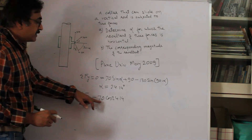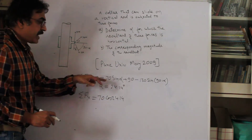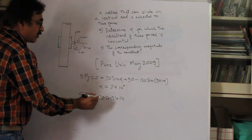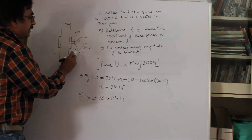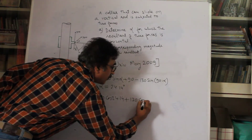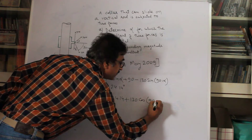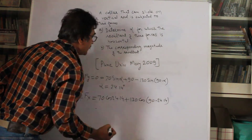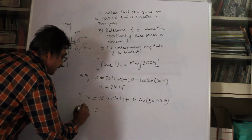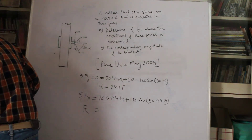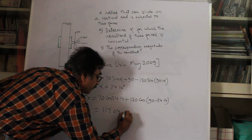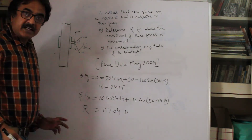Now resolving horizontally: sigma Fx = 70 cos(24.14°) + 130 cos(90 − 24.14°). The 130N force resolved horizontally is positive and added. Calculating this gives the resultant R = sigma Fx = 117.04 N. That is the final answer — the magnitude of the horizontal resultant is 117.04 N.